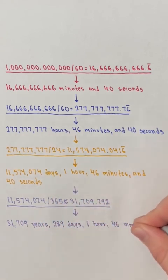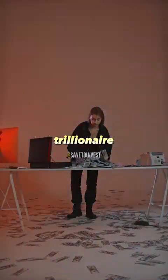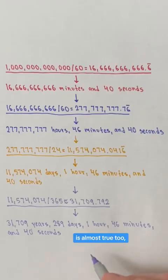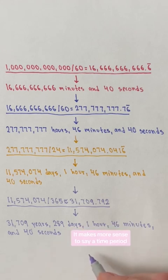289 days, 1 hour, 46 minutes, and 40 seconds. You'd be a trillionaire within 31,000 years is almost true too, but it has a similar issue to the billionaire claim. It makes more sense to say a time period greater than the time it takes.